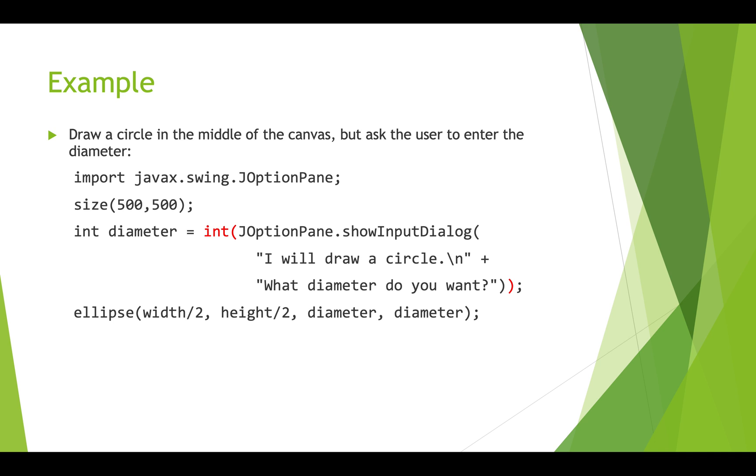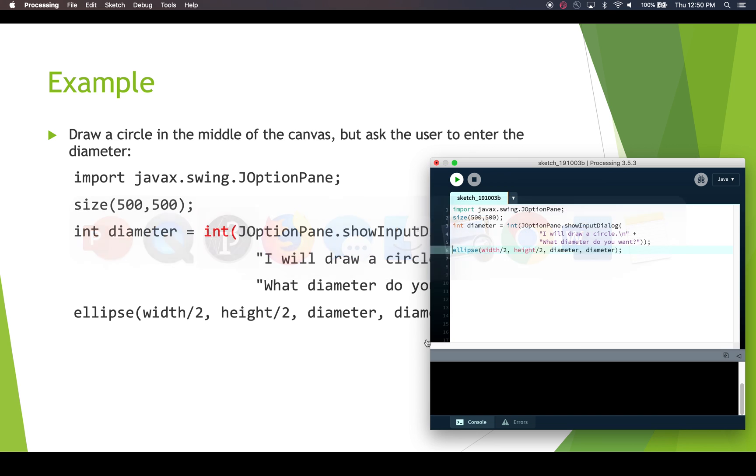So here's a final example. If we want to get input from the user and treat it as a number then we're going to use the J option pane that we used before where we got text from somebody but we're going to actually pass what we get back from this the string into the int operator and if you type in a number this should work and give you a diameter which can then be used to draw this on screen. So let's have a quick look at how this works. Here's this code it's exactly what you see here. We import J option pane we set our size and we ask for the diameter and then we draw an ellipse.